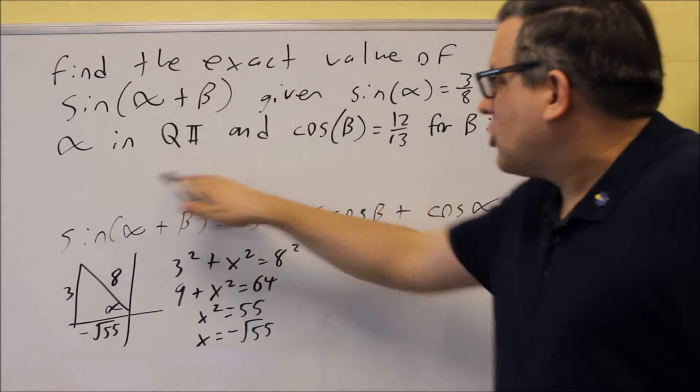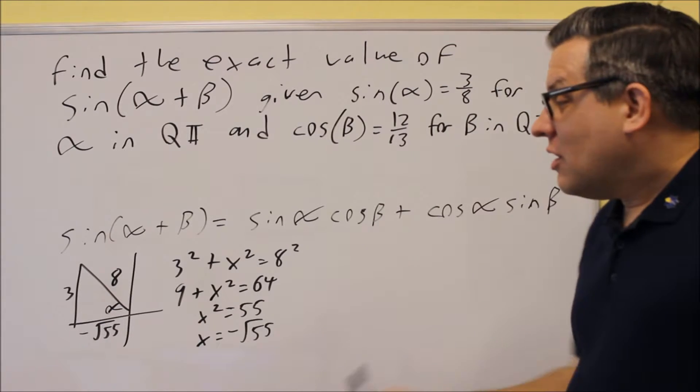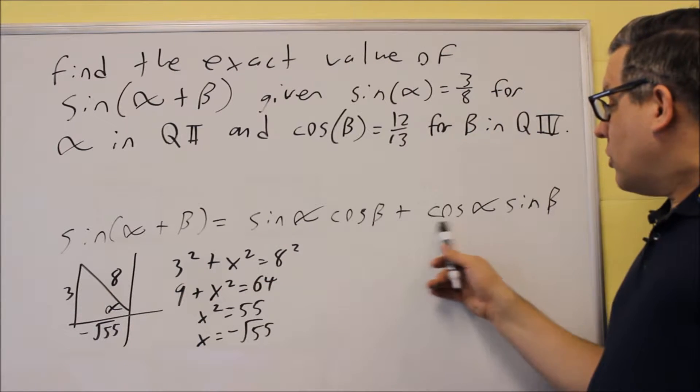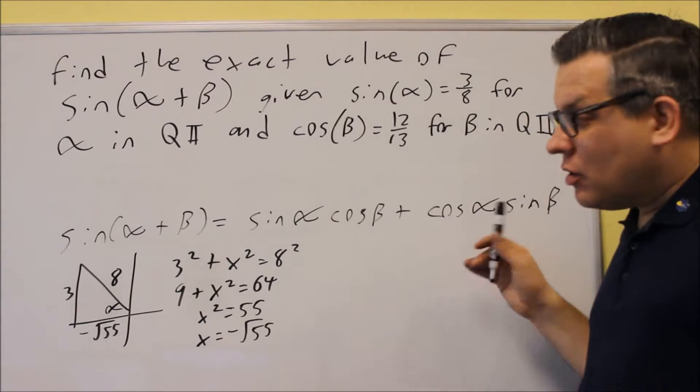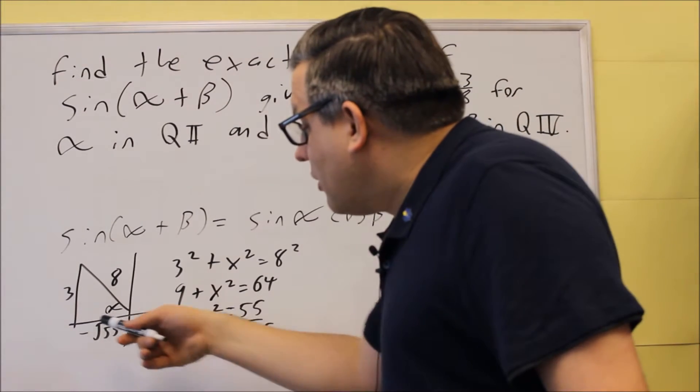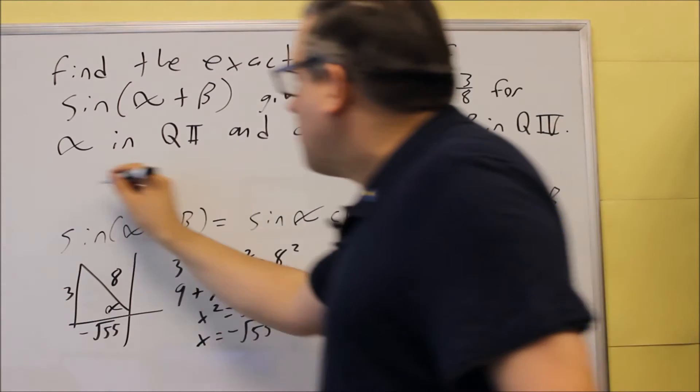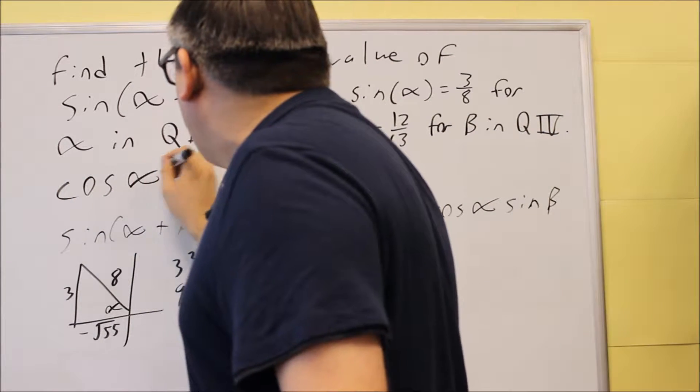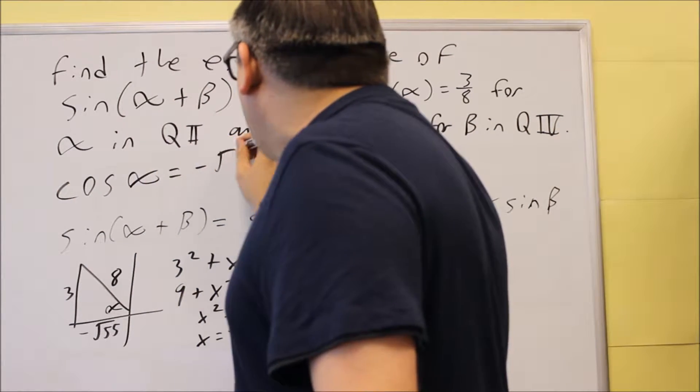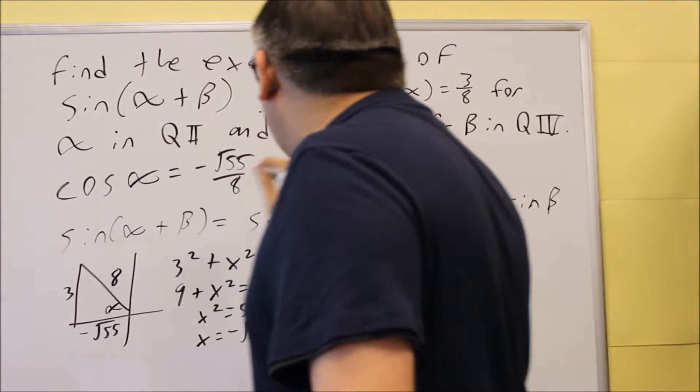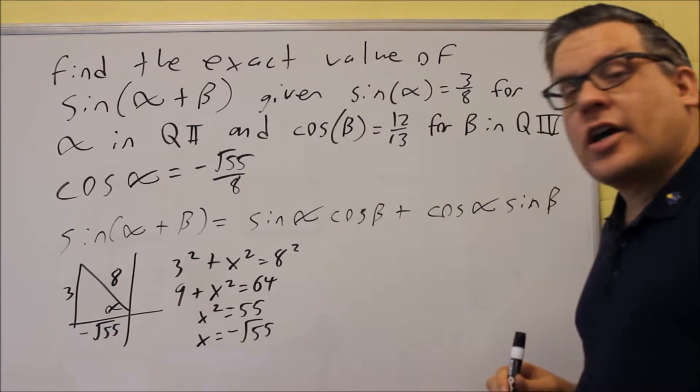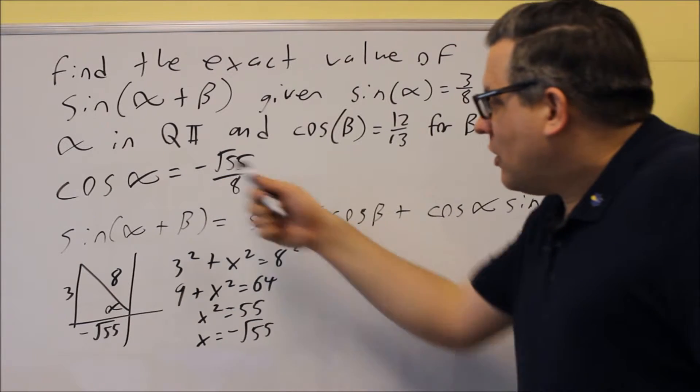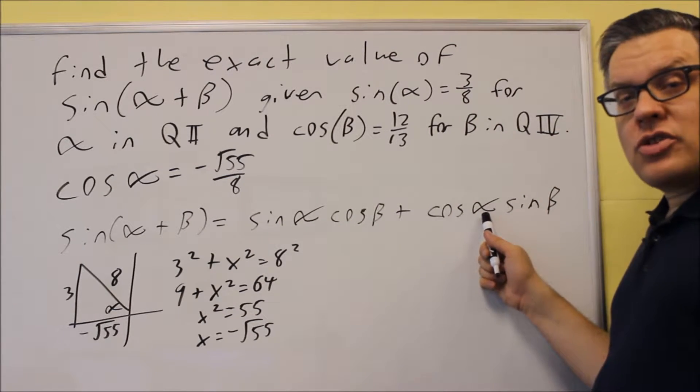Now, I left some space here because I want to go ahead and write in the values that we get for what we're looking for. We want to find cosine alpha because that's part of the formula. So cosine is adjacent over hypotenuse. So I'm going to go ahead and put right here, cosine alpha is equal to negative root 55 over 8. Now, this wasn't originally given to us. This is just the information now we're writing down based on the triangles that we drew. So this is now a value we can put in here for cosine alpha.